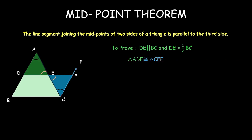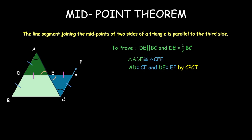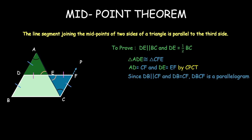Since these two triangles are congruent, that gives us AD is equal to CF, and DE will be equal to EF. But AD was already equal to DB, since D is the midpoint of AB. So that means DB is equal to CF. Looking at quadrilateral DBCF, we just proved that DB is equal to CF and DB is parallel to CF, so DBCF becomes a parallelogram — because if a quadrilateral has one pair of opposite sides equal and parallel, it becomes a parallelogram.